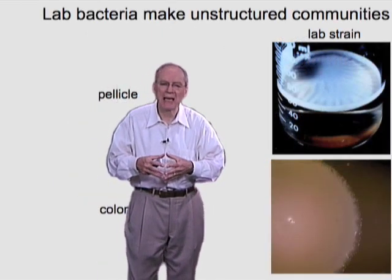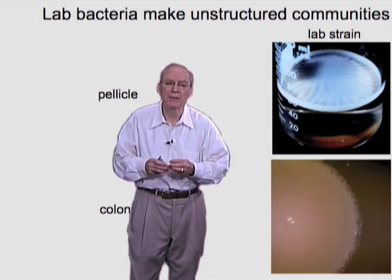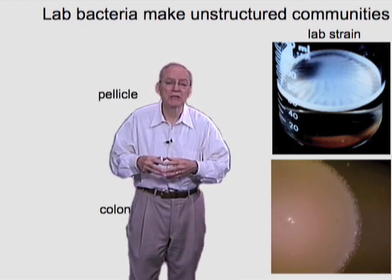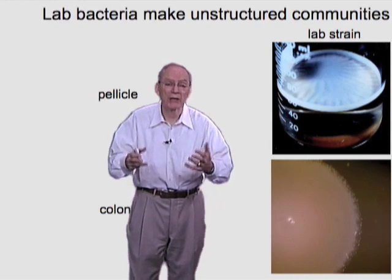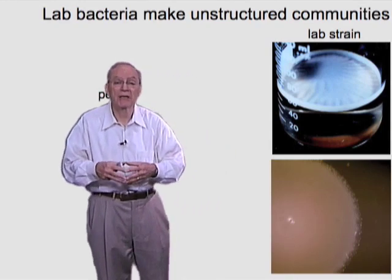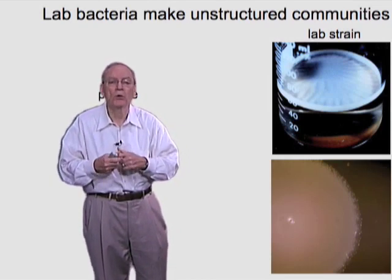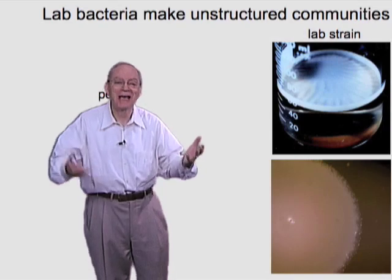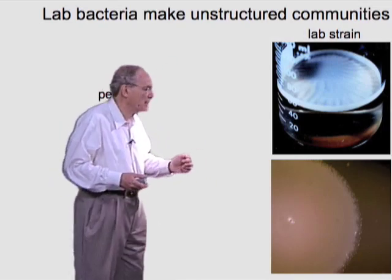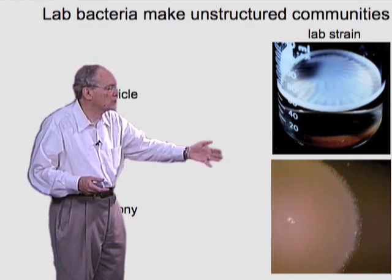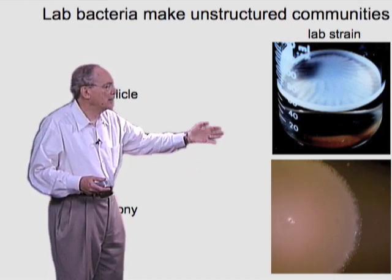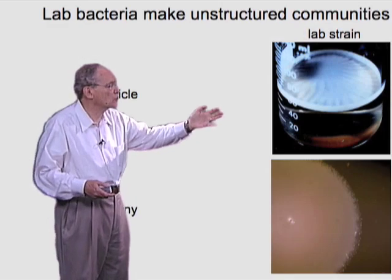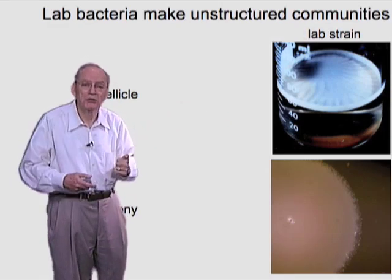The fact that B. subtilis is capable of forming architecturally complex communities was missed for many years because the bacterium has been worked on in the laboratory and, as a consequence, has inadvertently become domesticated. The standard laboratory forms don't form robust multicellular communities — it's as if we've bred this out of the bacterium over time. A colony of lab B. subtilis on a plate forms a relatively unstructured colony, and a standing culture shows bacteria collected as a very thin film at the surface with not much architecture.